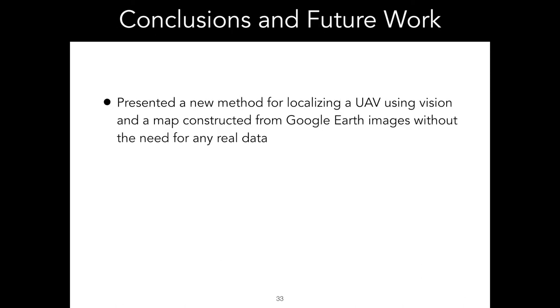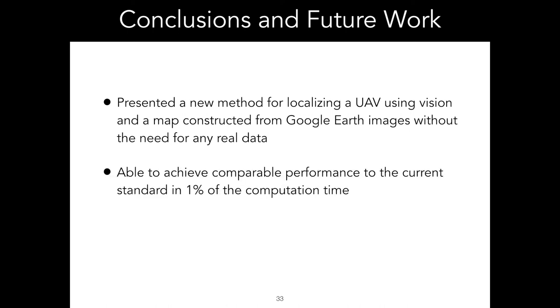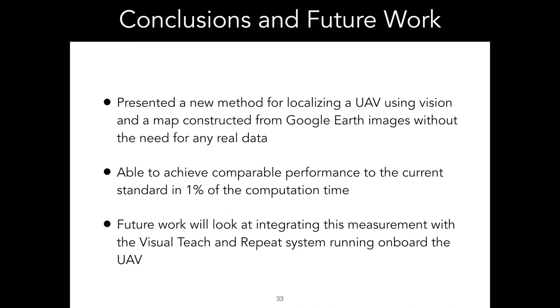To conclude, we presented a new method for localizing a UAV using vision and a map constructed from Google Earth reference images. Using an autoencoder entirely trained on Google Earth data, this new method allows the map to be generated entirely offline without the need for any real data. This new method is still able to achieve comparable performance results with the most similar technique, but in 1% of the computation time. Our future work is looking at integrating this method with the entire visual teach and repeat pipeline and running it onboard the UAV in real time. Thank you for your attention.